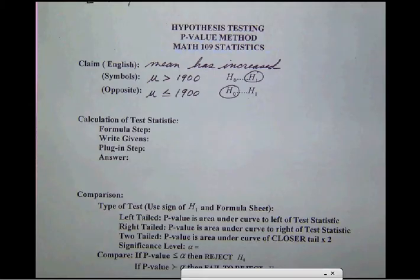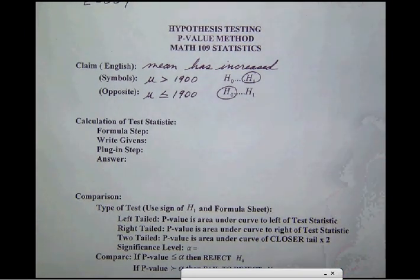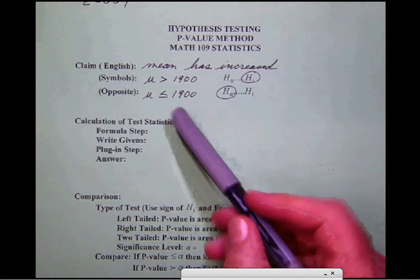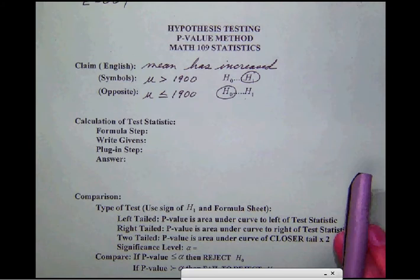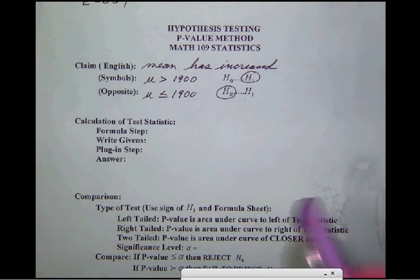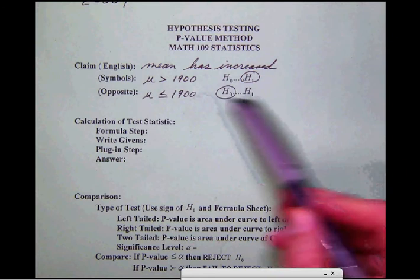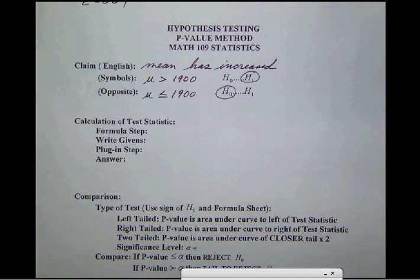Okay, now we will notice here that the claim in English, notice that the claim is that the mean has increased. Now we have to read between the lines here a little bit and add to this as well, because they've told us what the mean used to be. So if the mean has increased, then we have to interpret here the claim that the mu now is greater than what it used to be, which was the 1,900. The opposite of that is that now it's less than or equal to 1,900, and of course, then we establish the null and alternate hypotheses.